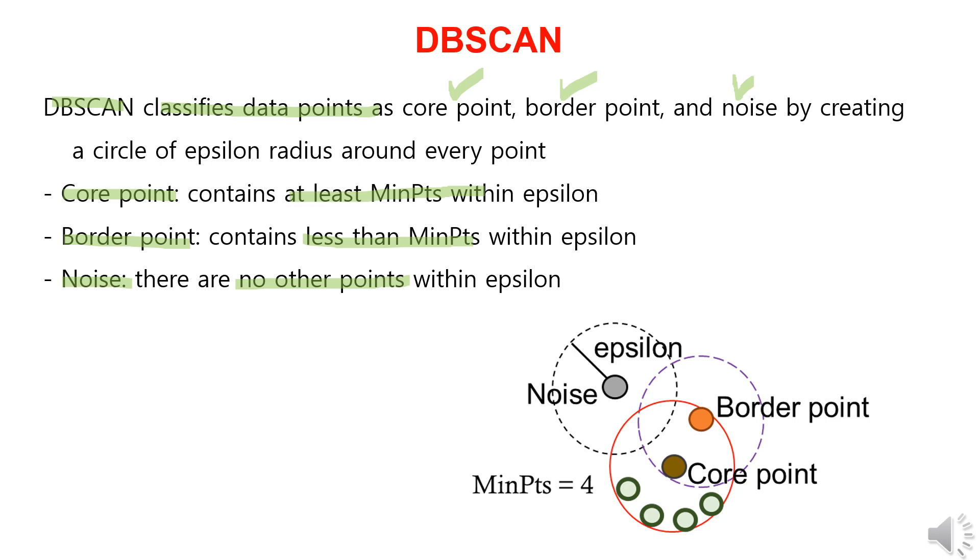As shown in this diagram, when the minimum points are set to four, the brown point has a circle with an epsilon radius containing more than five data points, making it a core point. The orange point has only two data points within the circle, which is less than the minimum of four, so it becomes a border point. Lastly, the gray point is considered noise because there are no other data points within its epsilon radius.